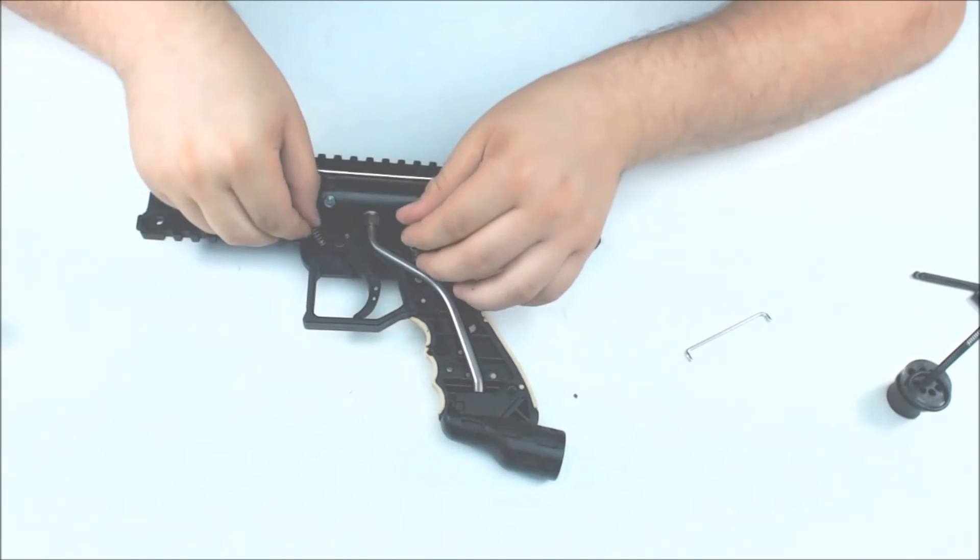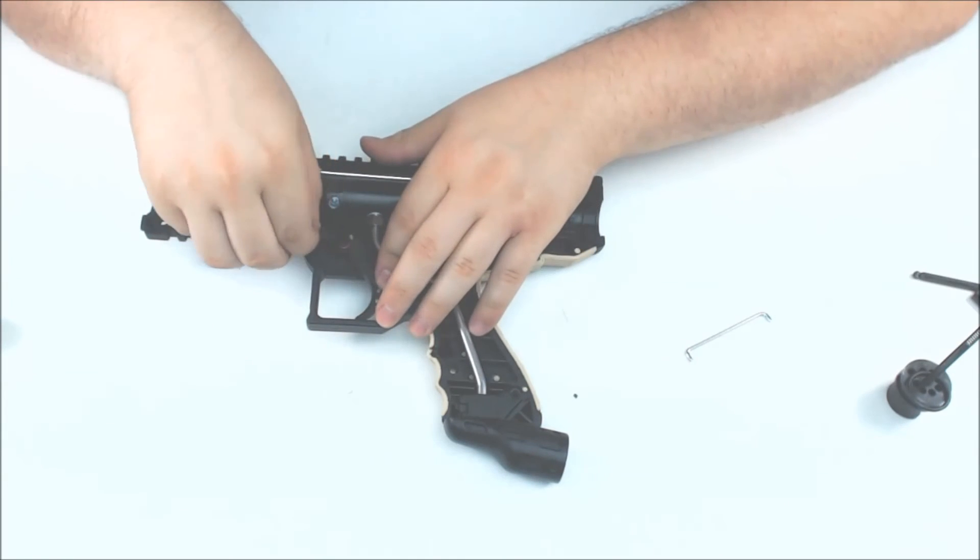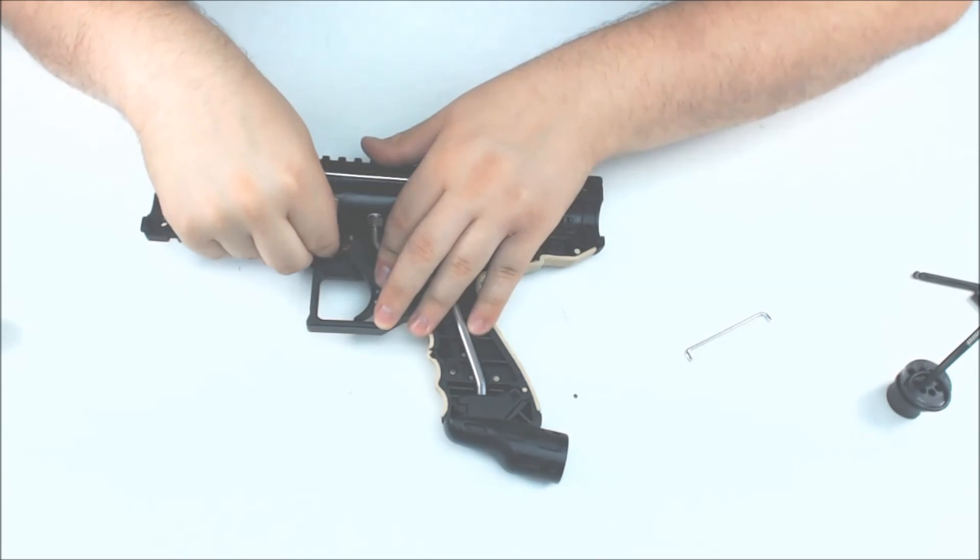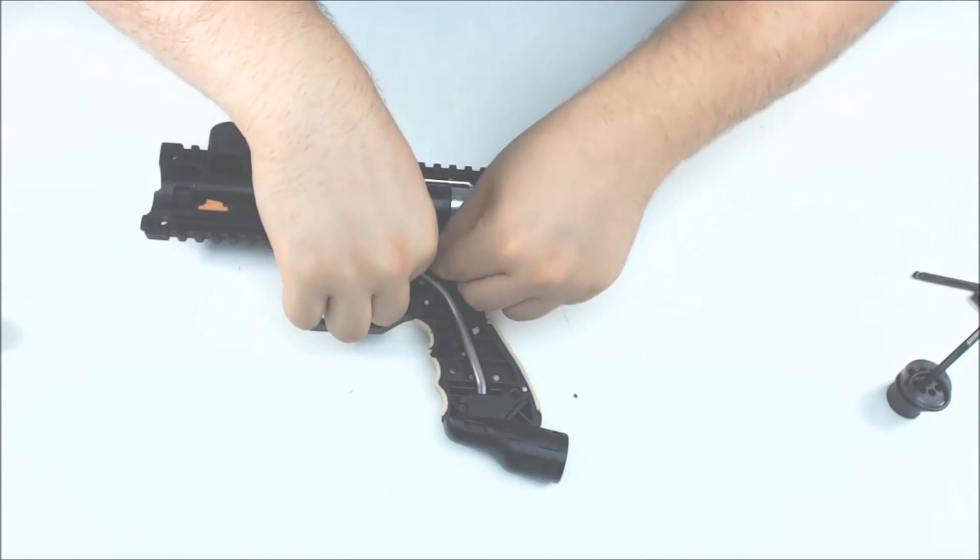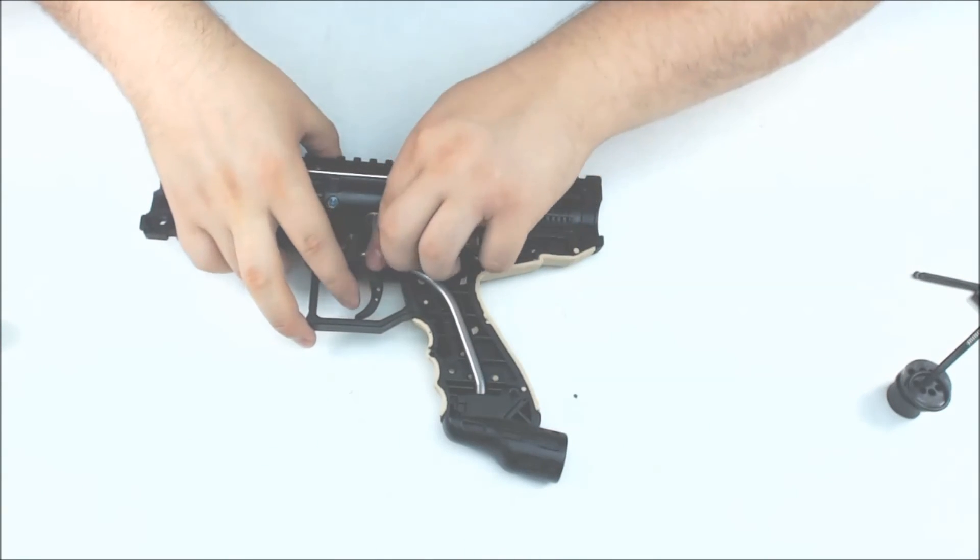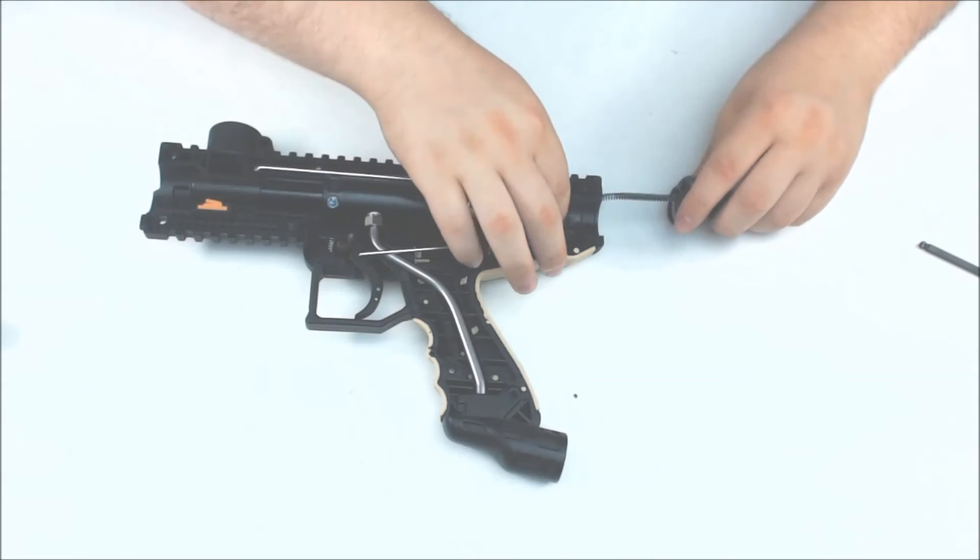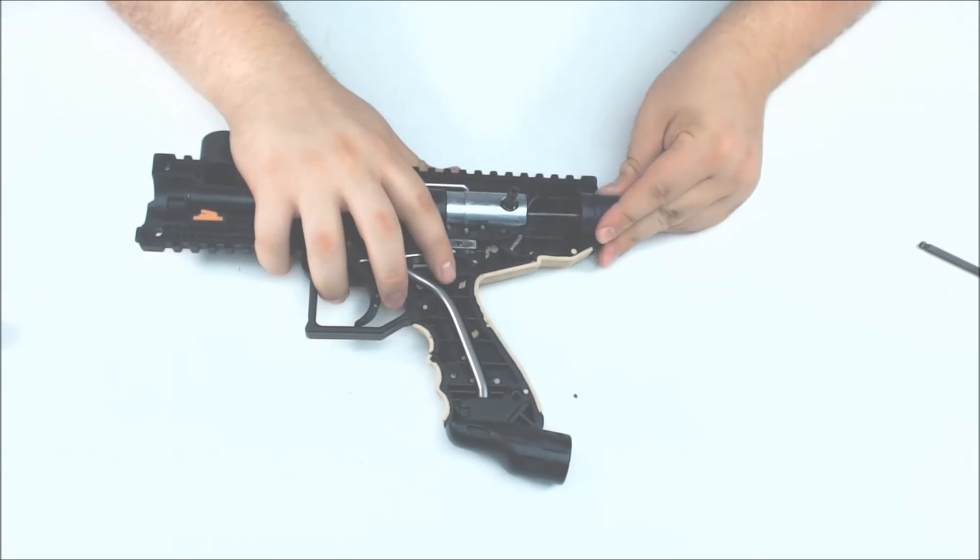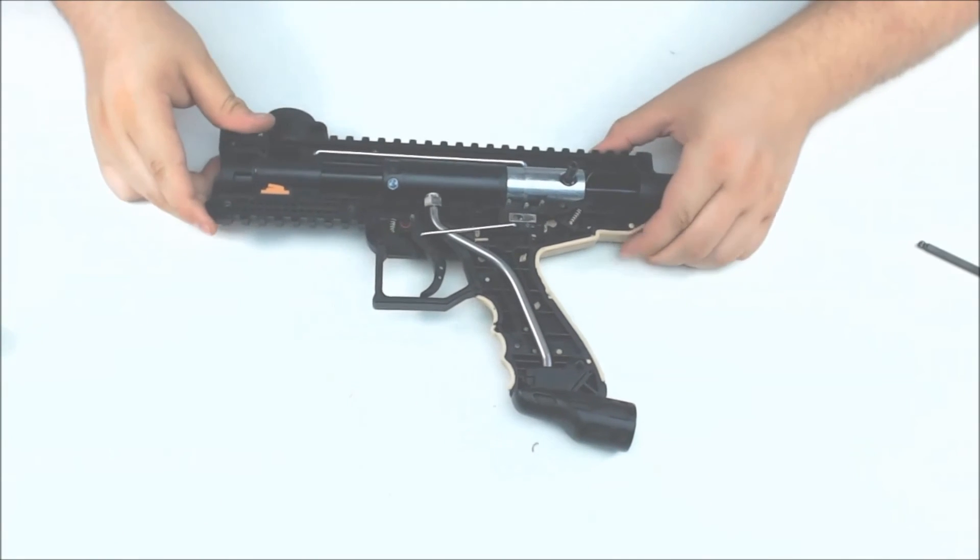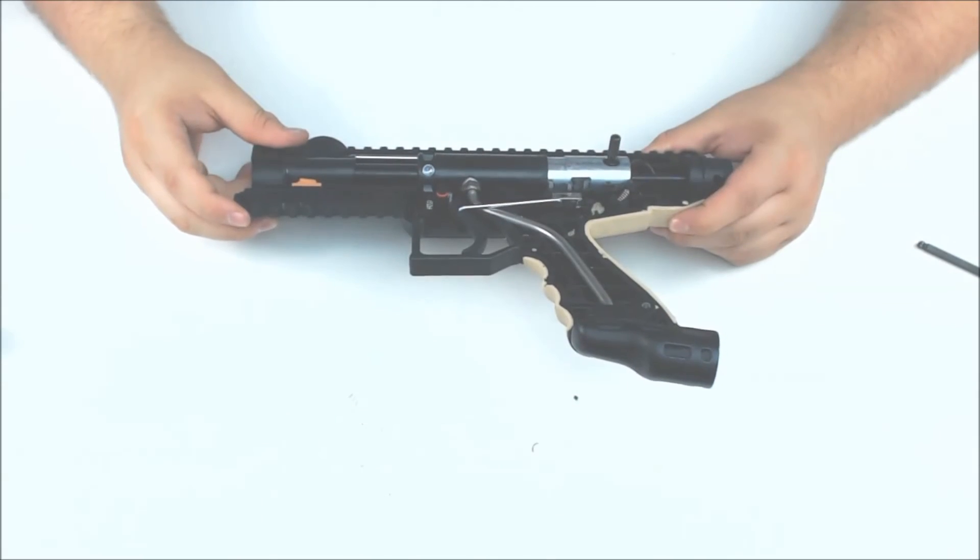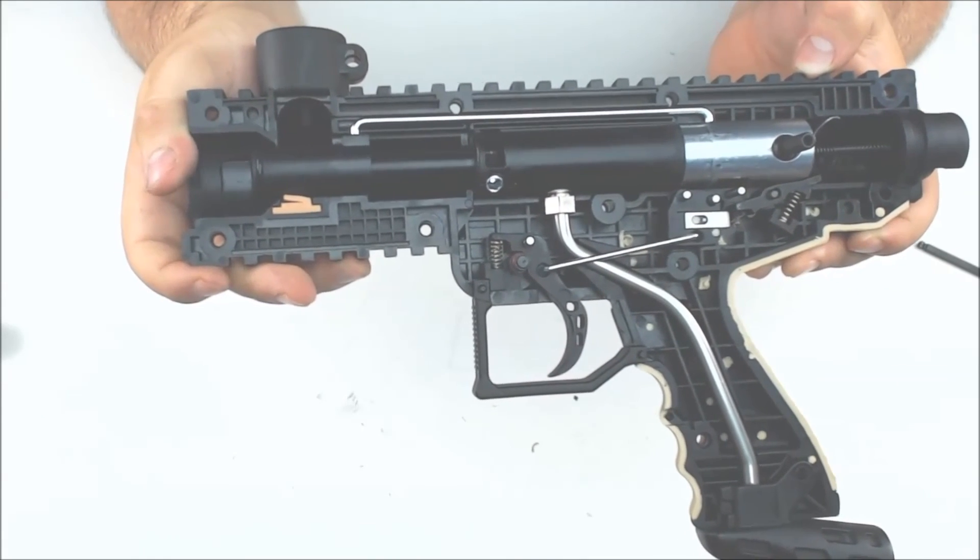Oops. You got to be careful of those springs popping out on you. All right. Now I got it. All right. Then we'll attach those two. That goes in like that. We're ready to slide all this back in. All right. And then we've got all that ready to go. So that's what it's going to look like when you're ready to put the other receiver half back on. And so now we'll do that.